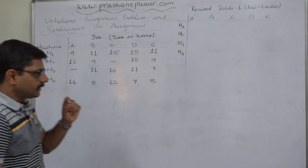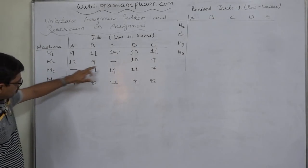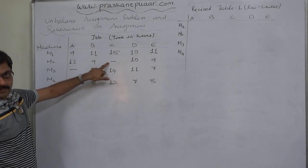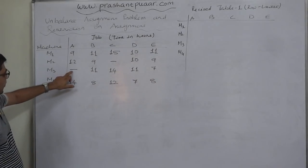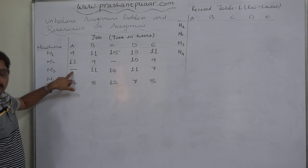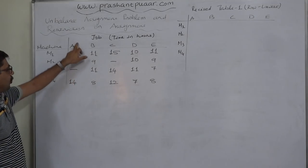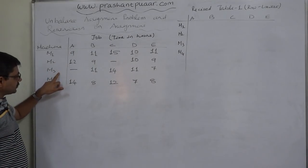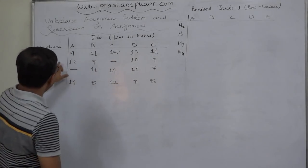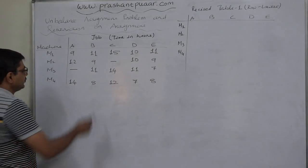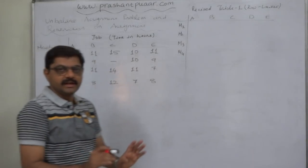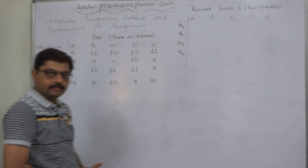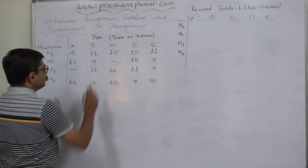The other small new point in this case is there are two places without any value of time. M3 and A dash. The interpretation is, we cannot assign job A to machine 3. Job A cannot be assigned to machine 3. In the same way, job C cannot be assigned to machine 2. These two places are not to be considered at the time of any step of solving the assignment problem.